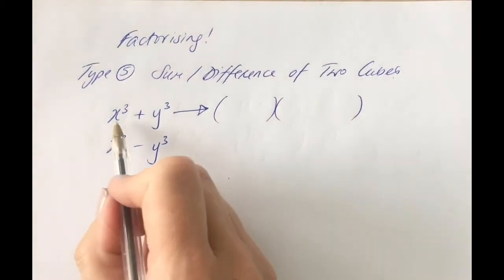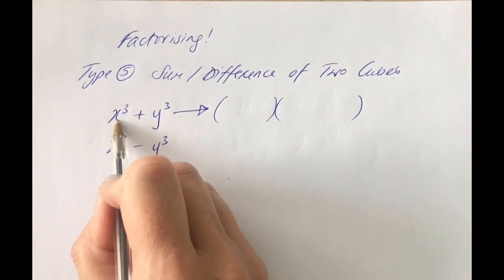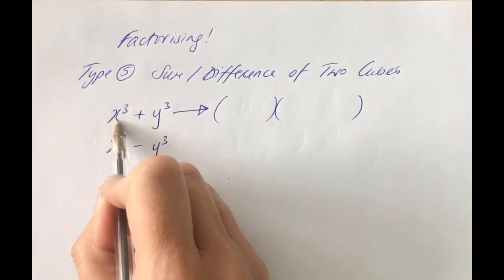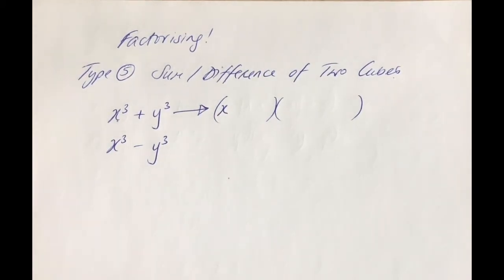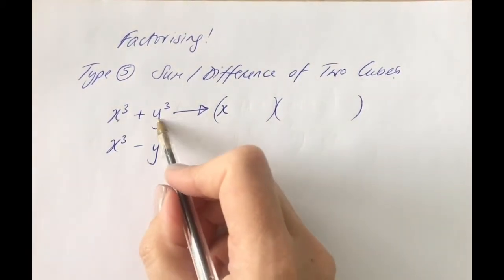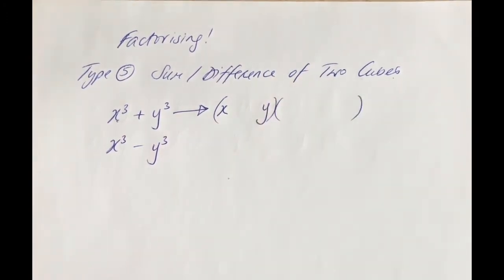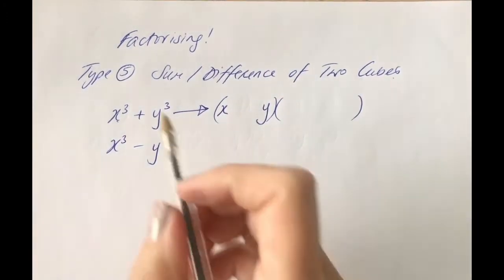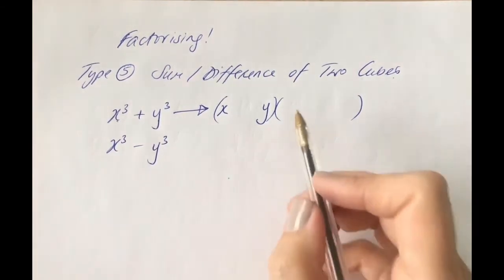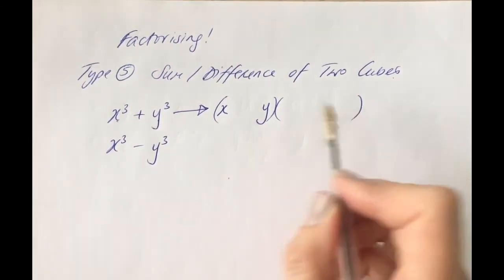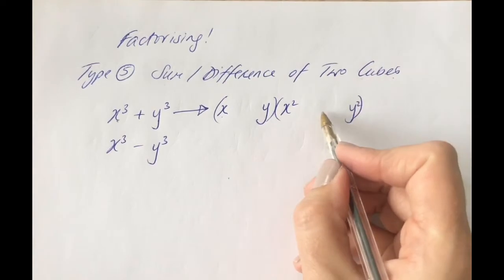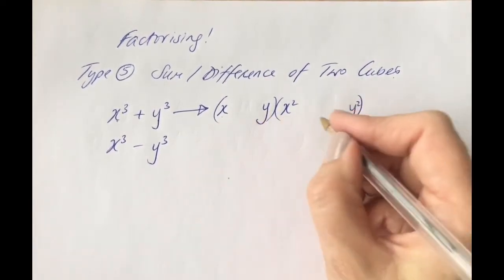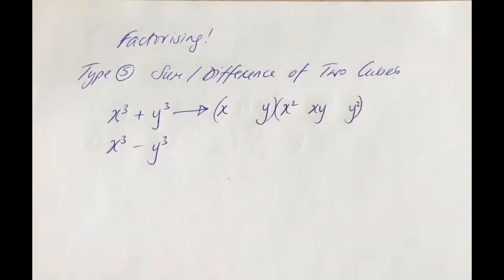The way we fill this in is: whatever has been cubed to get the first term — the first term is x cubed, so the cubed root of x cubed is x — goes in first. What has been cubed to get the second term, y, goes in next. Then the second bracket: we square this and square this, and the middle term is the product of these two — multiplying x times y, we get xy.